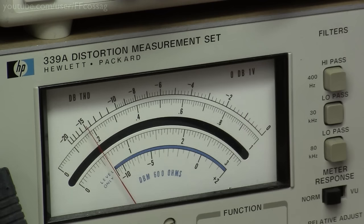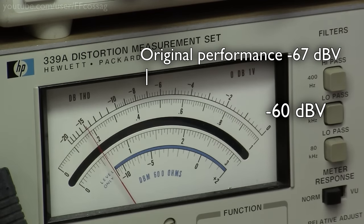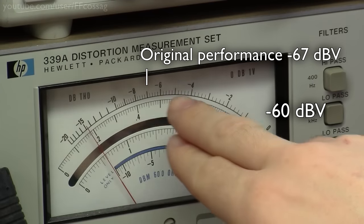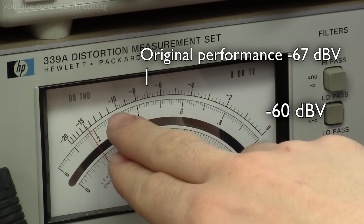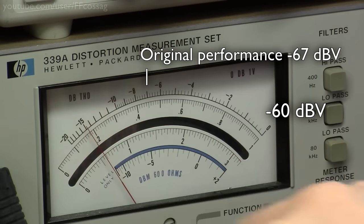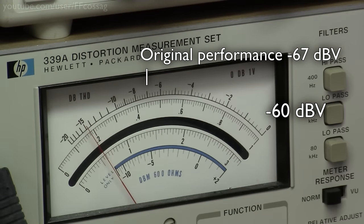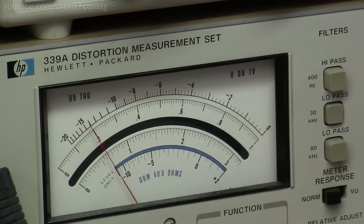And yes indeed, so we are now at minus 60 decibel volts full scale, and we've got minus 70, 71, 72, 73, 74, minus 75 decibel volts, so that's a quite considerable improvement.